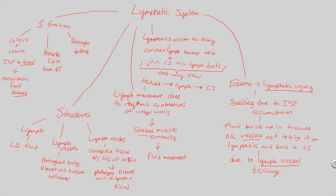That covers the circulatory system. Hopefully you've gained a greater appreciation for its complexities. The main idea is that we want a unidirectional flow of blood — making sure blood flows to the right place, at the right time, at the right rate, within the right vessel. That covers our look at circulation.